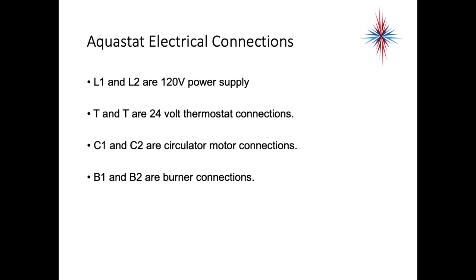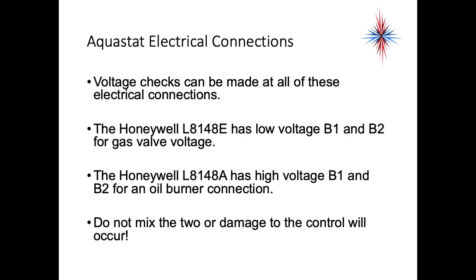Aquastat electrical connections are pretty much standardized with very few differences. L1 and L2 are the 120-volt power supply. T and T are the 24-volt transformer or thermostat connections. C1 and C2 are circulator motor connections, and B1 and B2 are burner connections. Voltage checks can be made at all of these electrical connections. The Honeywell 8148 has low voltage B1 and B2 for gas valve voltage, while the Honeywell 8148A has high voltage B1 and B2 for oil burner connections. You must make sure you have the correct aquastat — do not mix up the two, or damage to the control, gas valve, or burner will occur.